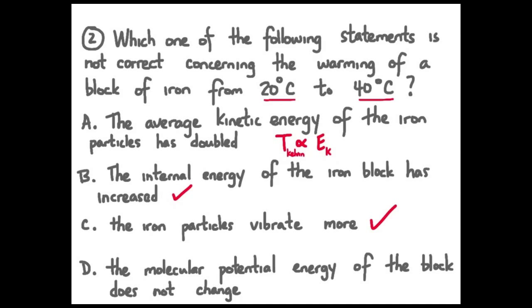Simply because you're doubling here is in degrees Celsius, not Kelvin. So, let's see why D is also correct. There is no change in spacing of the particles. You're not melting the iron. You're not increasing the particle spacing. So, the molecular potential energy of the particles in the block also stays constant. It does not change. D is also correct. Answer is A.